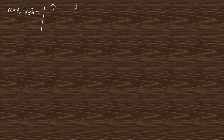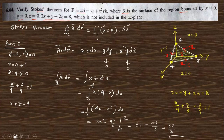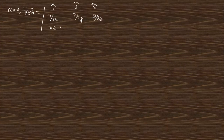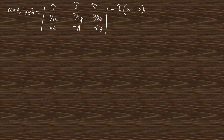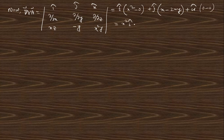Curl of A is computed as the determinant with i, j, k in the first row; ∂/∂x, ∂/∂y, ∂/∂z in the second row; and the components xz, −y, x²y in the third row. This gives: i(∂(x²y)/∂y − ∂(−y)/∂z) + j(∂(xz)/∂z − ∂(x²y)/∂x) + k(∂(−y)/∂x − ∂(xz)/∂y). Simplifying: curl A = x² i + (x − 2xy) j + 0 k.